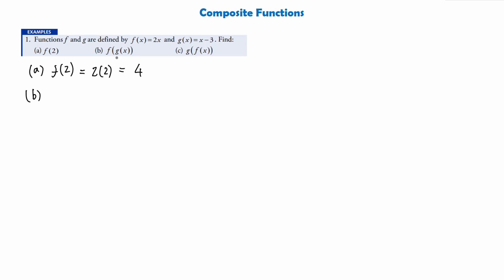For part b we are asked to find the composite function f of g of x. The best way to work this out is to start by changing g of x to what that function actually is, so instead of g of x we write x minus 3. Anywhere we see an x in f of x we change it to x minus 3, so we're simply going to have 2 times x minus 3. Note we put this in brackets because it's 2 times all of this. This gives us the composite function 2x minus 6 when we expand the brackets.